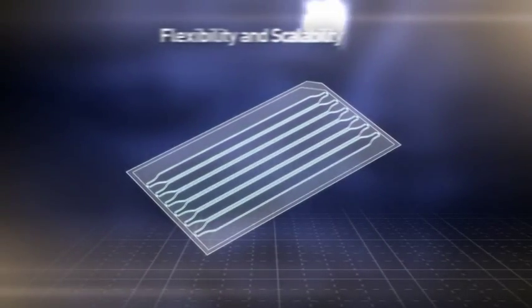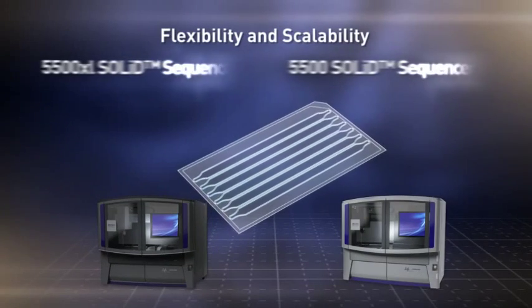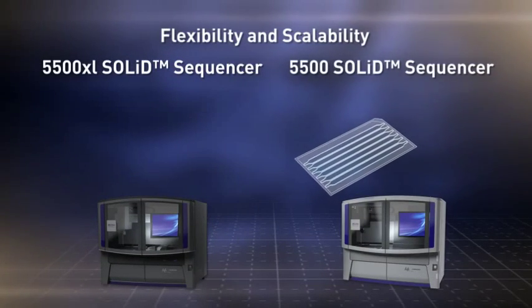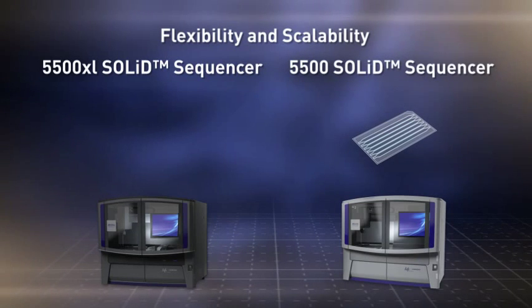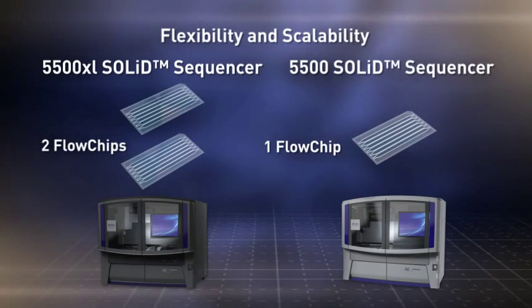The flexibility and scalability to accommodate a wide variety of applications stems from the system's configurable flow chips, processing up to either 6 or 12 independent samples, or hundreds of multiplexed samples in a single run through barcoding.